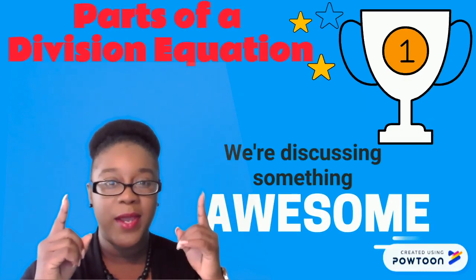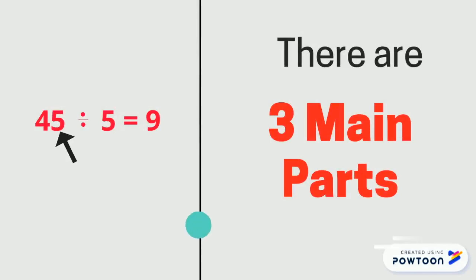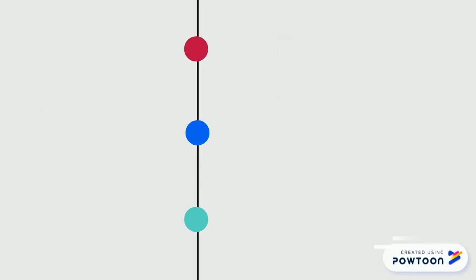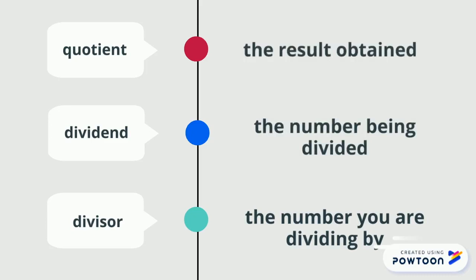There are three main parts to a division equation. They are the divisor, the dividend, and the quotient. The divisor is the number you are dividing by. The dividend is the number being divided, and the quotient is the result obtained.